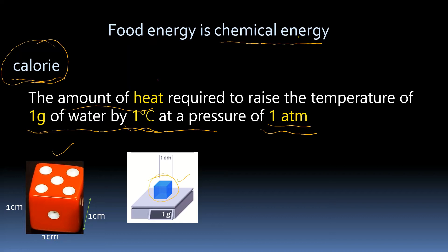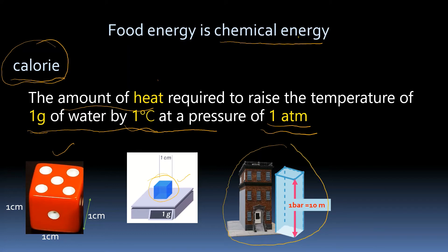This is from the pressure video. 1 atmospheric pressure is around 10 meter of water pressure, which is equivalent to a 3-story building filled with water. How much is 1 degree Celsius? We have to supply heat to raise the temperature of water to 1 degree Celsius. So if the temperature is 15 degree Celsius, we are going to raise it to 16 degree Celsius.